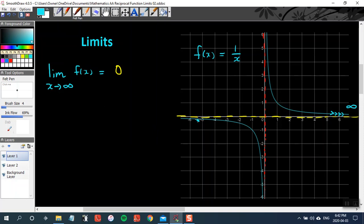Similarly, if x gets really small and goes far left, then our function is still approaching zero. So the limit as x approaches negative infinity of f(x) is also zero.